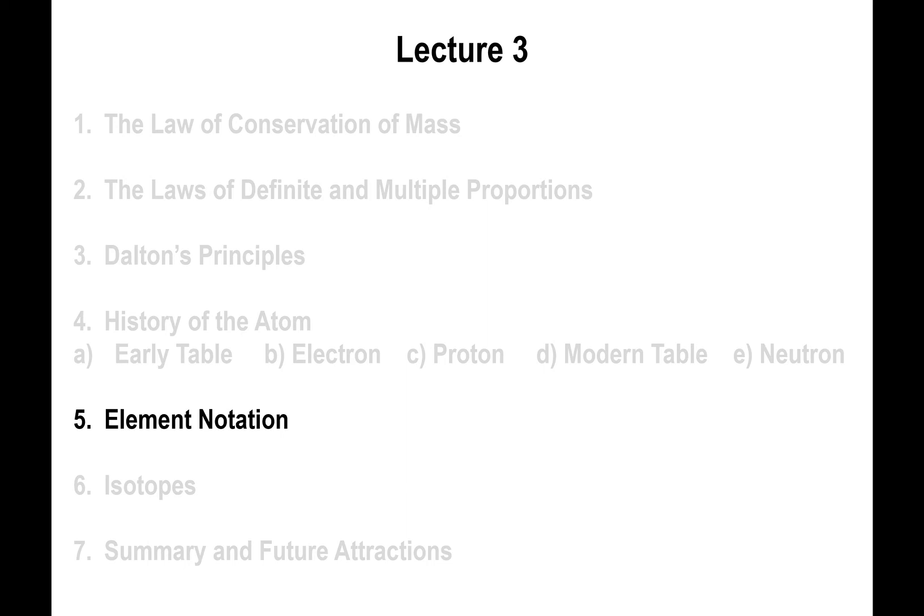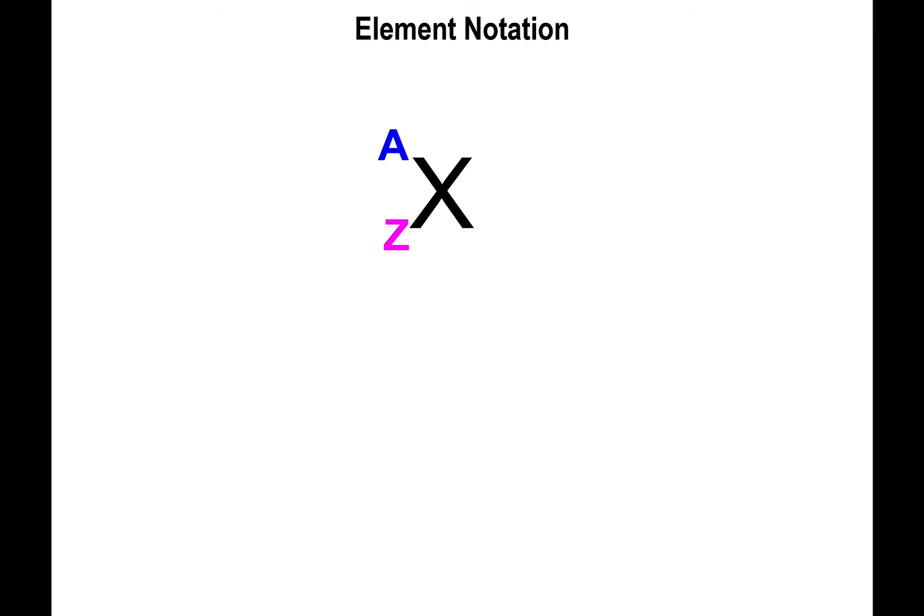All right, element notation. So the symbols that we typically use to represent the element in the full context are as follows. You have this big X right here that's meant to represent the symbol of the element in question. Now, the element symbol absolutely depends on the identity of Z. Z, the subscript value here on the left side, is the atomic number of the element, and whatever the atomic number of the element is automatically dictates the identity of the element, and vice versa. The moment you know the identity of the element, automatically you have the atomic number.